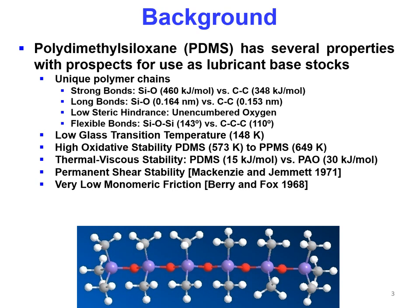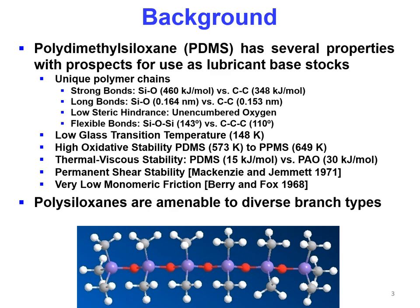Some of these properties give it a low glass transition temperature, meaning it remains liquid to very low temperatures. It has high oxidative stability — PDMS, polydimethylsiloxane, is stable below 573 Kelvin, while phenylmethylsiloxane is stable to 649 Kelvin. It also has viscous thermal stability and many other properties, such as low monomeric friction.